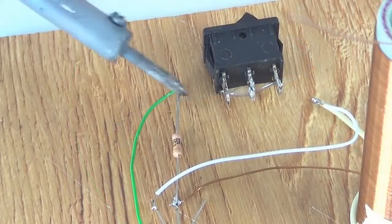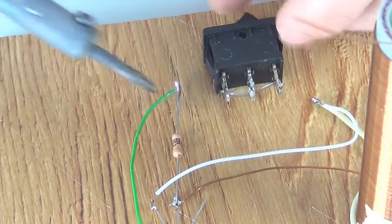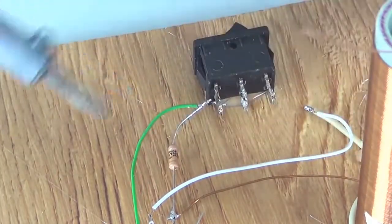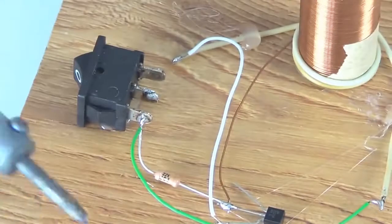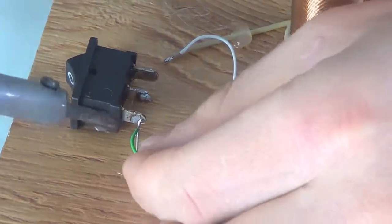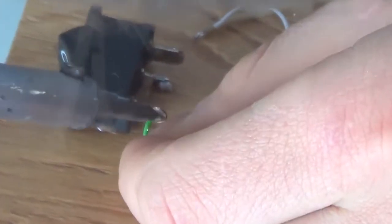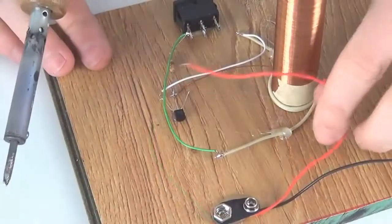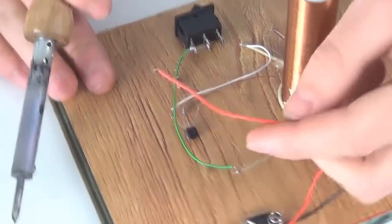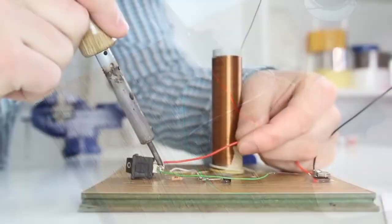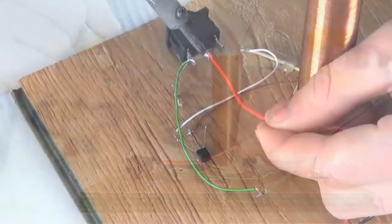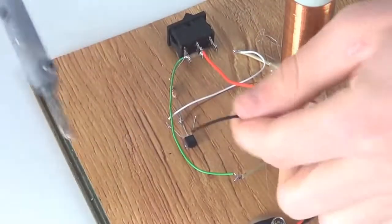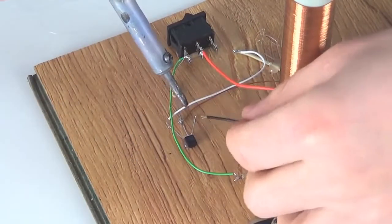Then connect the resistor and the wire of the secondary spool to the switch. Solder the red wire of the 9V battery, which is a plus, to the middle of the switch. The black minus wire we solder to the left contact of the transistor.